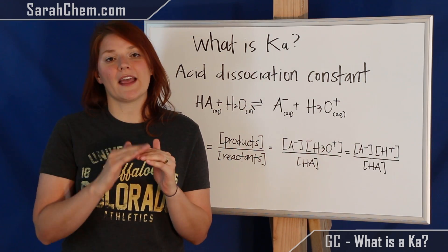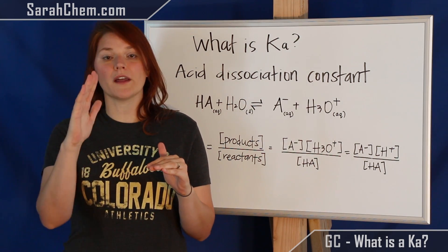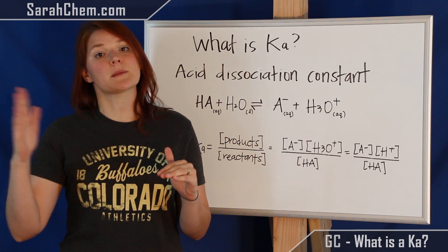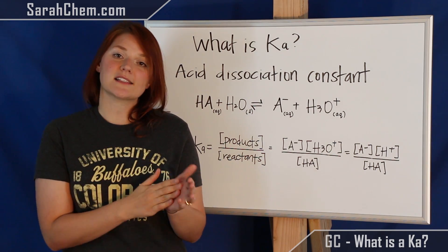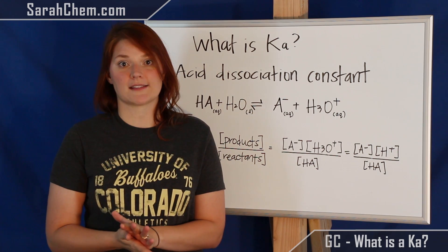So typically we're going to have a Ka value greater than one means we make more product. So that's going to be a stronger acid. If our Ka value is less than one, that's going to be a weaker acid.